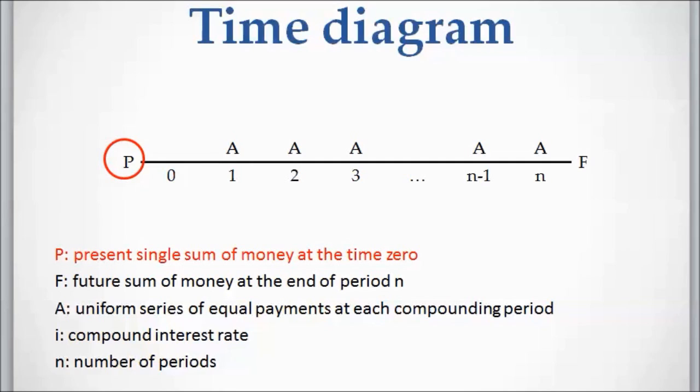Now let's add the variables. P on the left hand side is the present single sum of money at time zero. This is the amount of money that is received or paid at the present time—at time zero, year zero, or month zero. We could also write this P above time zero; it would be the same.